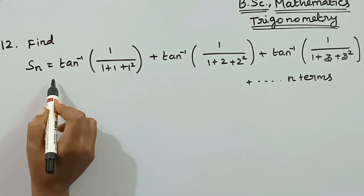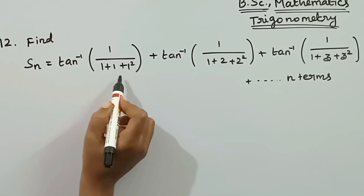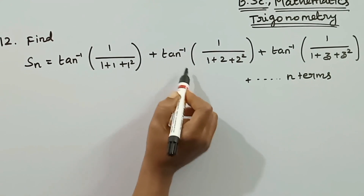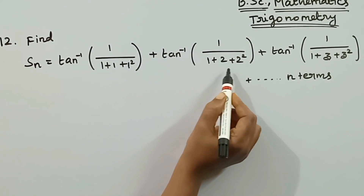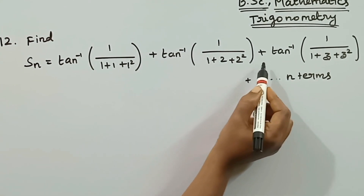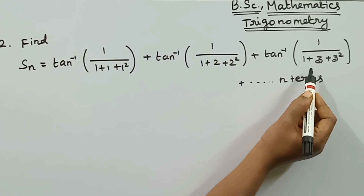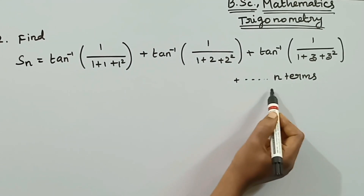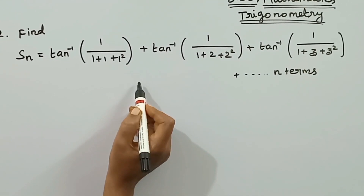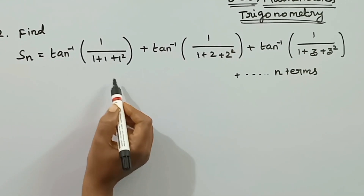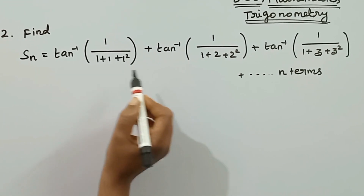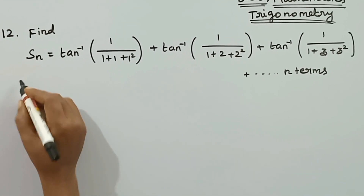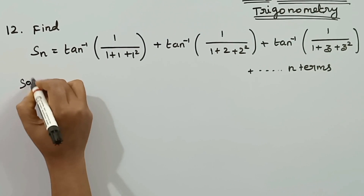Next problem: Find Sn equal to tan inverse of 1 by 1 plus 1 plus 1 squared plus tan inverse of 1 by 1 plus 2 plus 2 squared plus tan inverse of 1 by 1 plus 3 plus 3 squared, and so on up to n terms. We will calculate the sum to the first n terms.